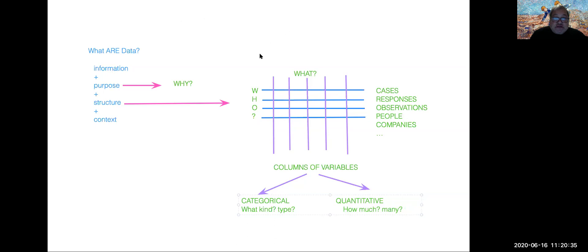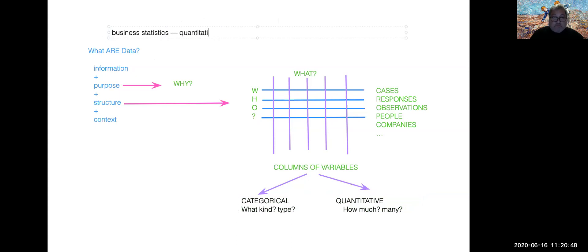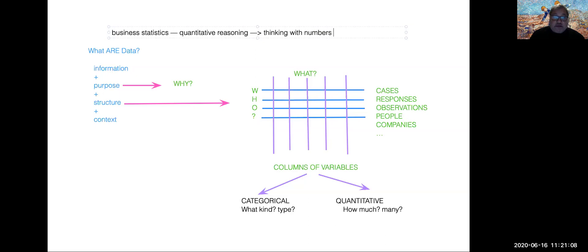This course is titled Business Statistics — it satisfies your prerequisite in quantitative reasoning in your general education. Quantitative reasoning means thinking with numbers. So what kind of numbers are we talking about? It's numerical adjectives — statistics.